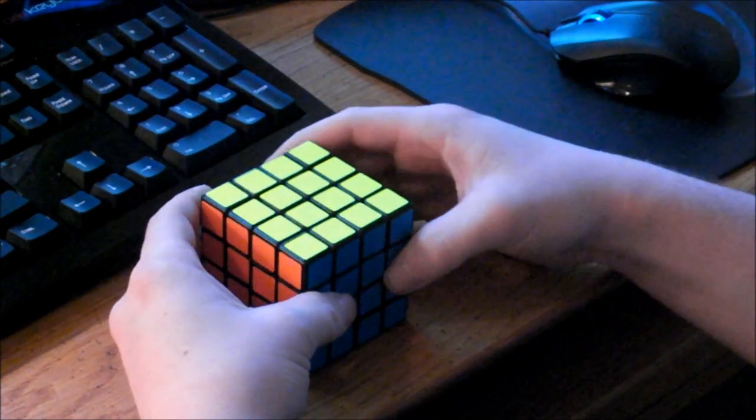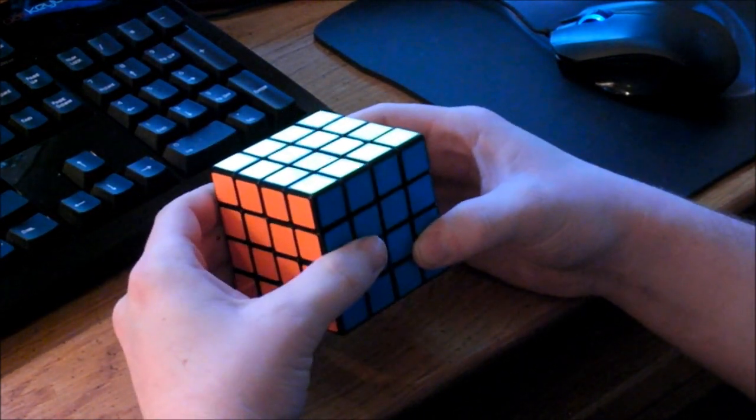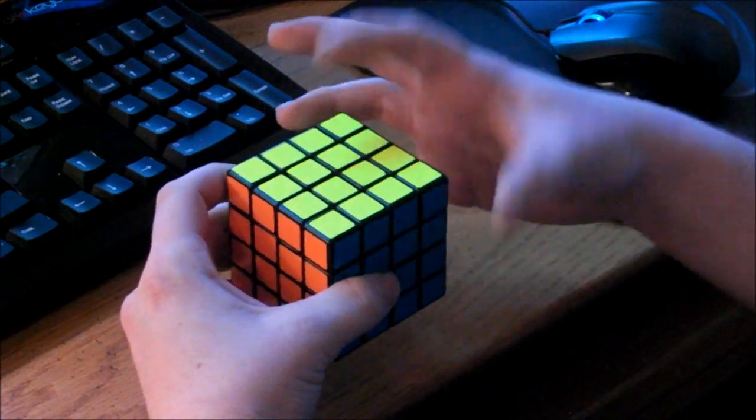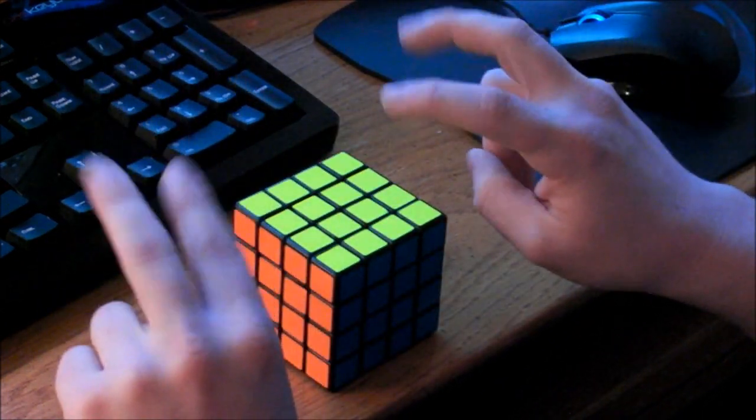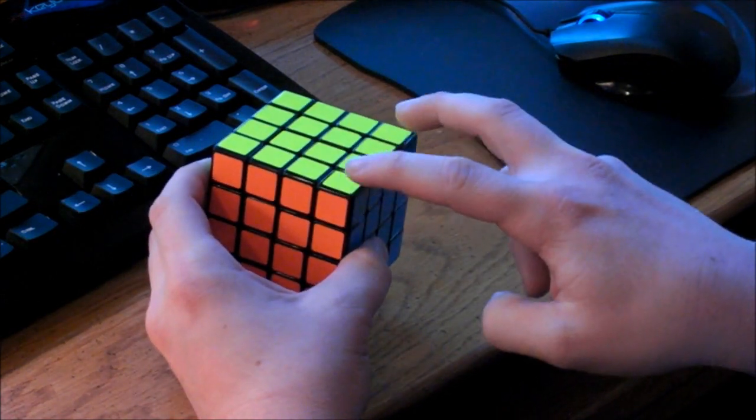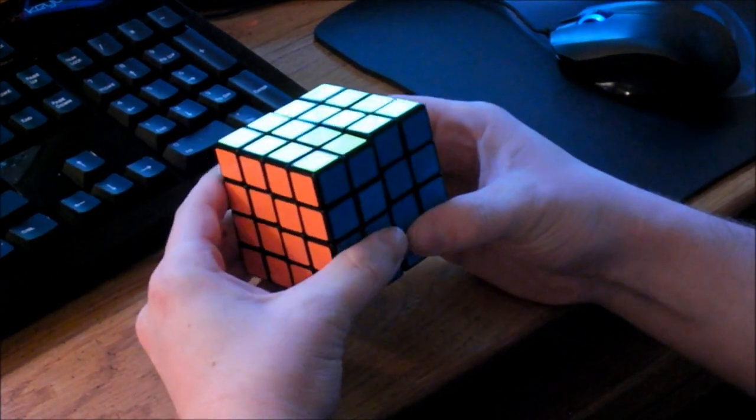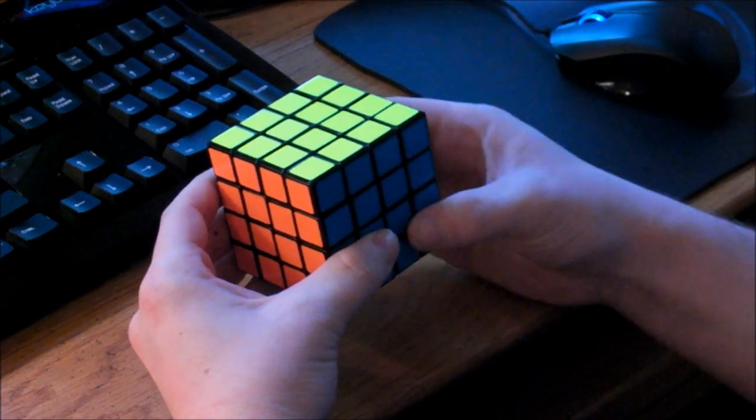Something I would like to note about the second OLL parity that I taught you, the one that I dislike, is that it can be used for a pure parity. Meaning that instead of switching these two corners and these two edges, you can modify it a little bit so it only flips this edge pair.